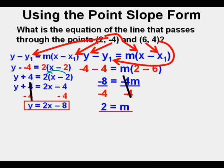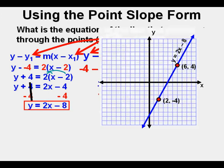We're left with y equals 2x minus 8. And this is our answer in slope-intercept form. And this is the graph of the line showing the original two points we used.